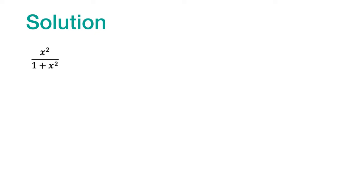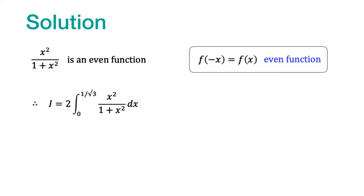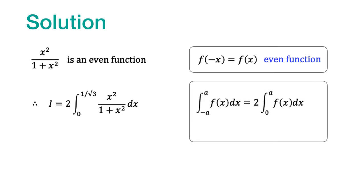The other function, x squared divided by 1 plus x squared, can be verified to be an even function. An even function satisfies the condition that f of minus x is equal to f of x. Therefore, the overall integral can now be written as twice the first integral, using the property that integrating f of x from minus a to plus a becomes twice the integral from 0 to a when f of x is even.